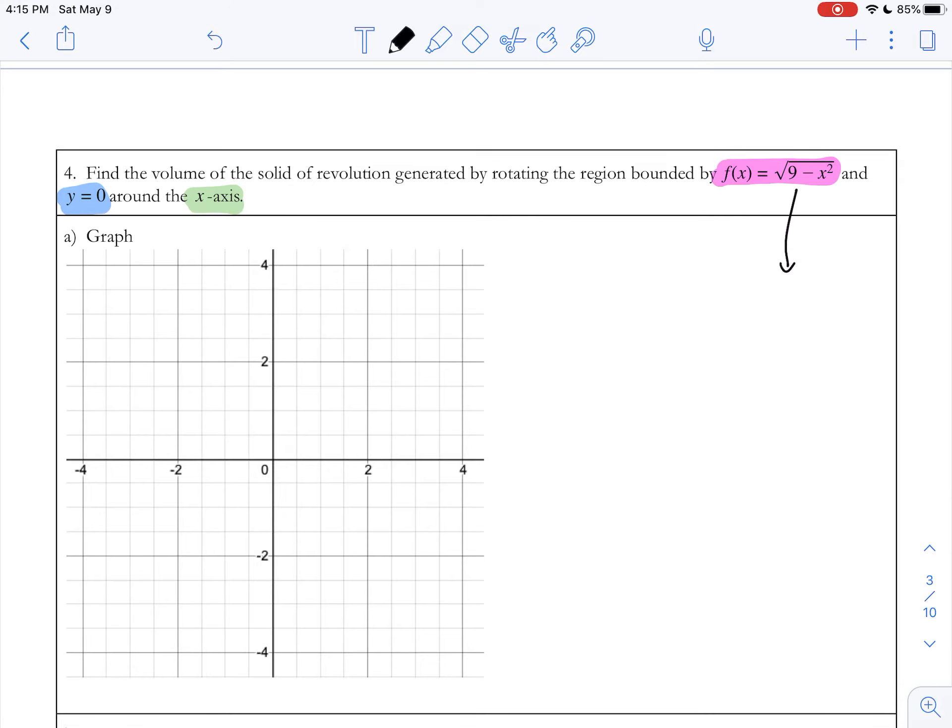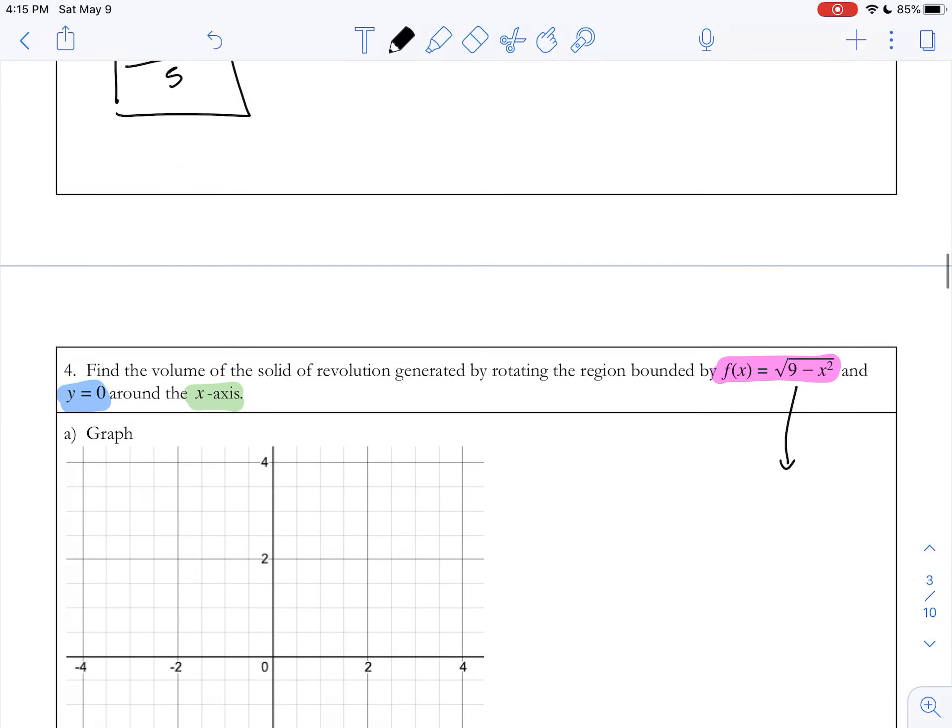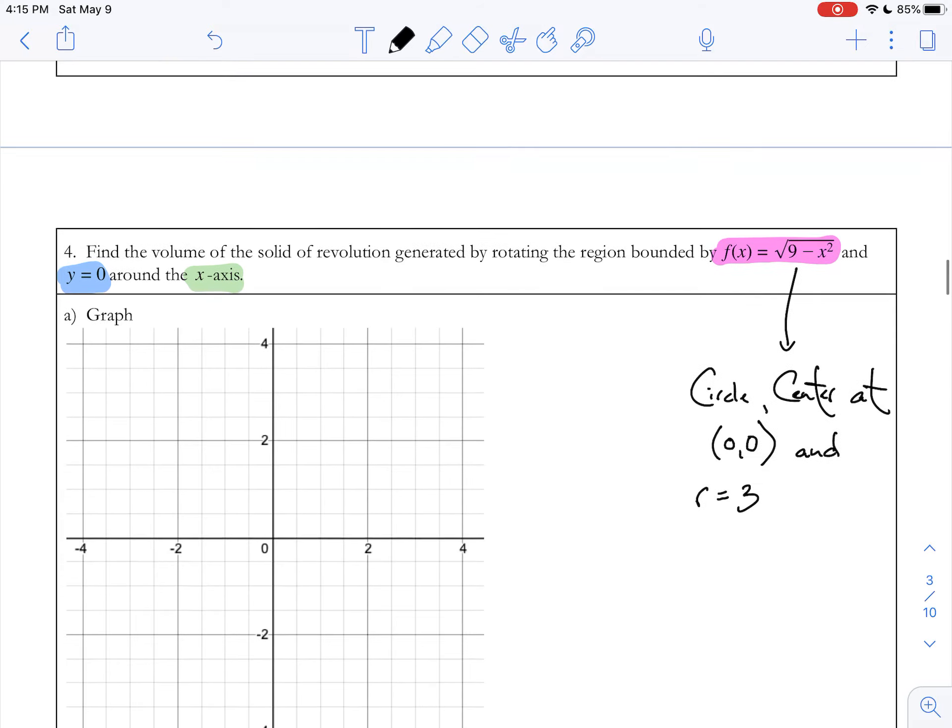All right, so let's sketch our graph. The square root of 9 minus x squared is a graph you should know. It's something that came up in chapter five, and it's something that will come up again in calc two. When I see √(9 - x²), I know that it is a circle with the center at (0, 0) and a radius of 3. That is information that you need to be able to recognize from that equation.